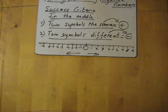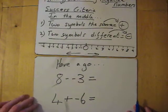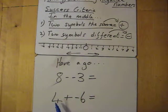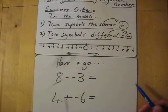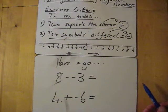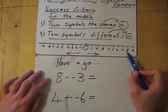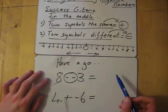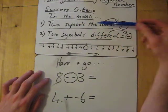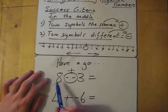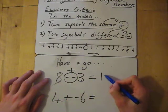Here are a couple for you to have a go at. I've got 8 take away negative 3, and 4 add negative 6. If you want to pause, I'll go through the answer in 3 seconds. So: I'm at 8, and looking at the two symbols in the middle — it's take away negative 3. The two symbols are the same, so that means I actually have to add. So that should be 8 add 3, which we all know is 11.